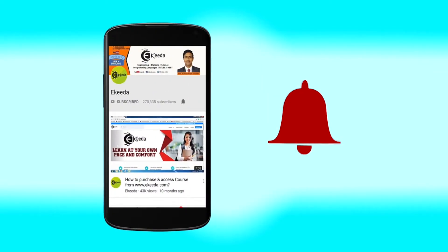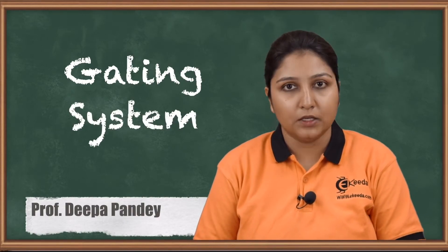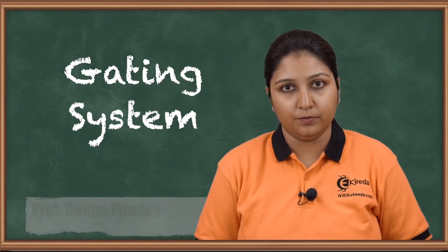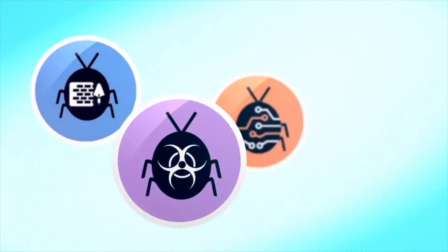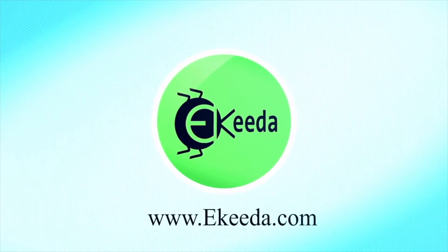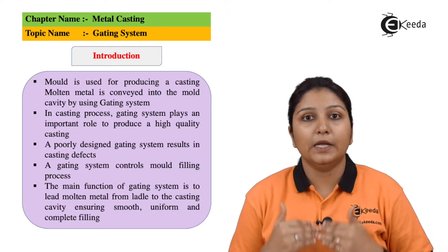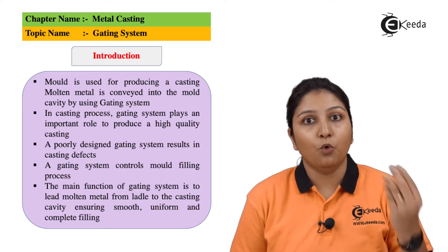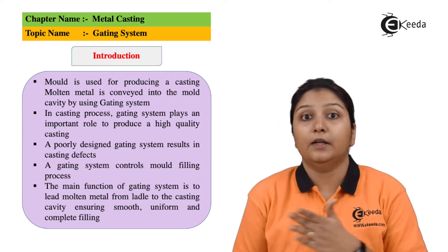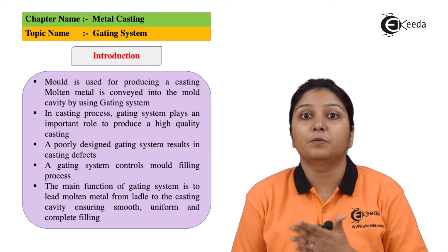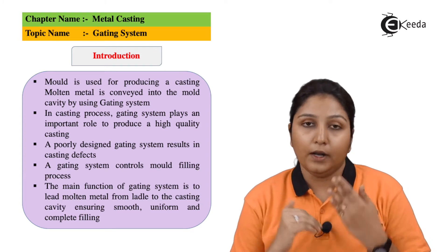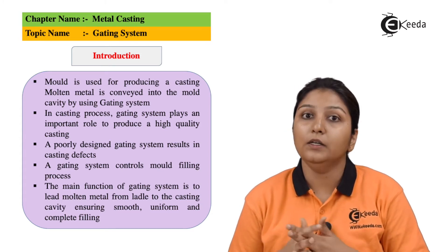Hello friends, today we are going to see an important part of the casting process — the gating process — how it is done and what the different parts are. Molten metal is conveyed into your cavity through the gating system. If the gating system is not proper, your mold won't be made properly, so gating is a very important part of casting.